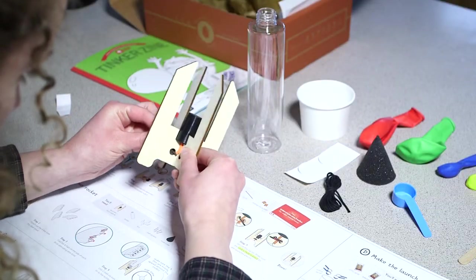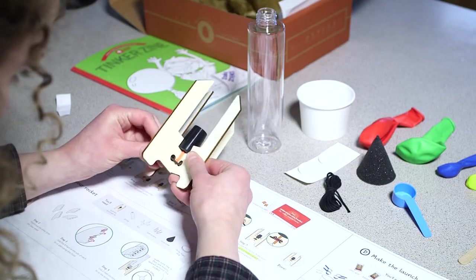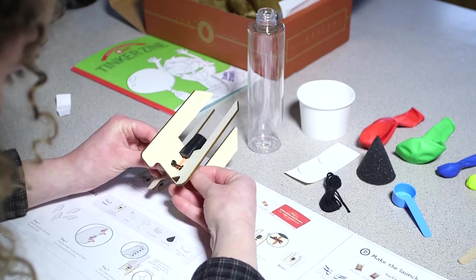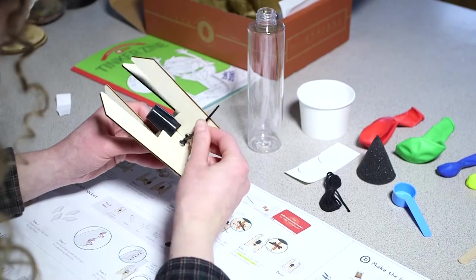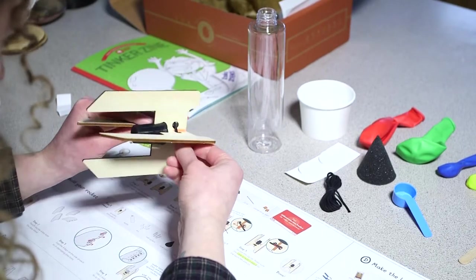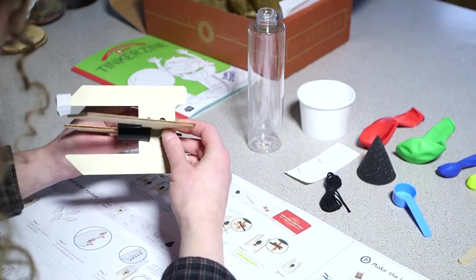Step number four: slide the zip tie through all four holes in the launcher pieces. Step number five: secure the zip tie. Make sure the cork is held in place by the launcher pieces.